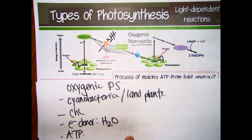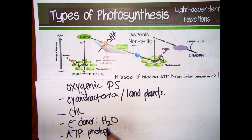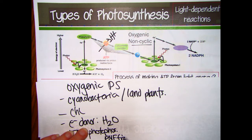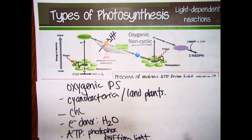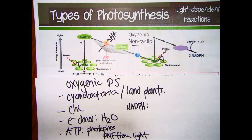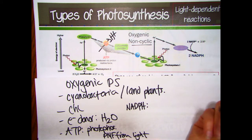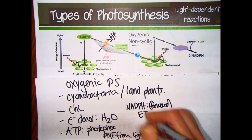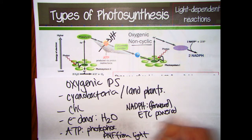ATP is made by photophosphorylation, which is similar to oxidative phosphorylation. It happens in the membrane, is done by ATP synthase, and is powered by a PMF. The PMF is from light energy instead of from chemical energy. We also need NADPH for anabolic reactions, and we'll be specifically looking for how that is made in each of these different photosynthesis processes.